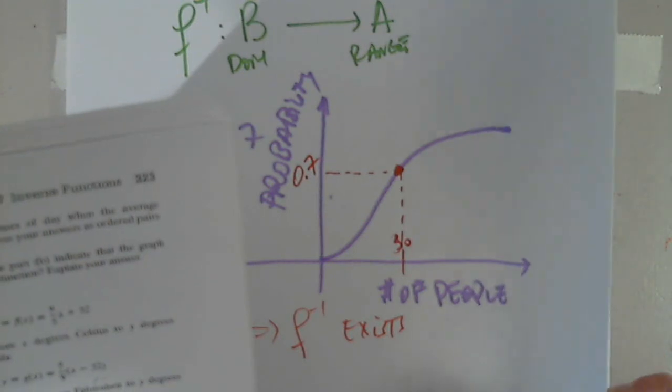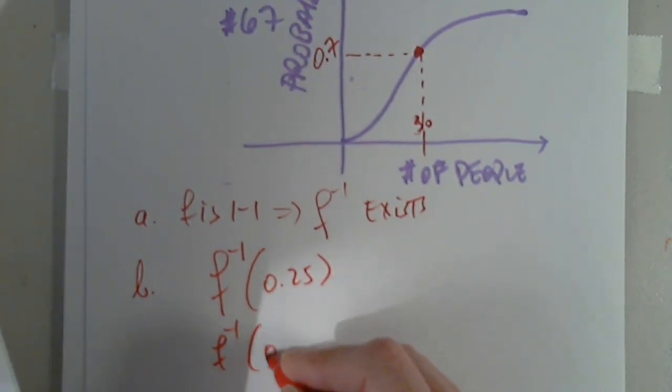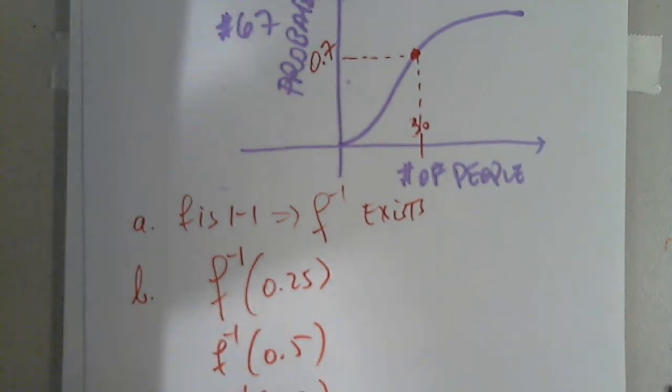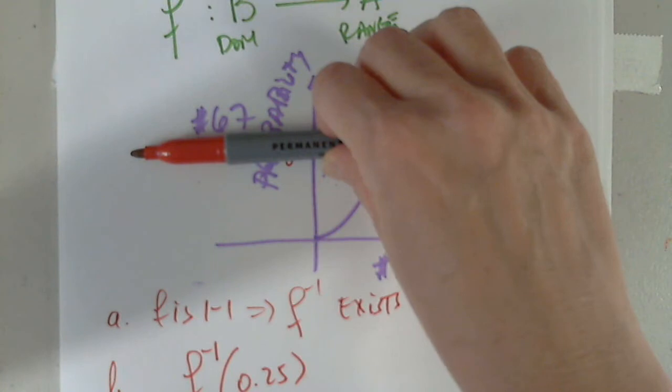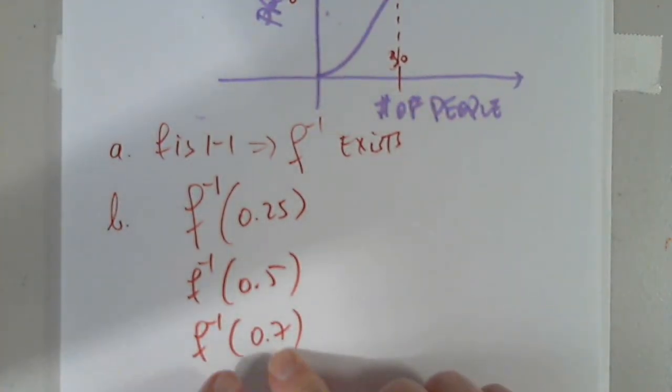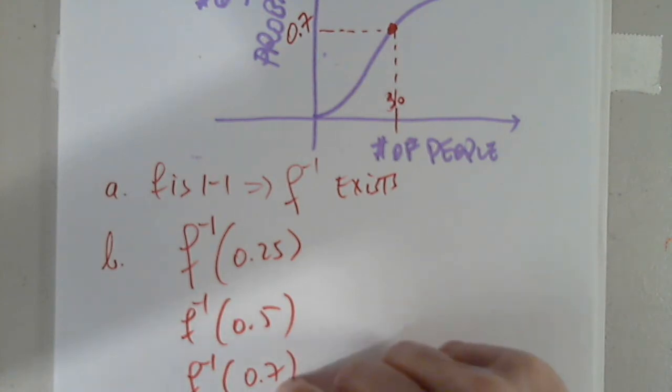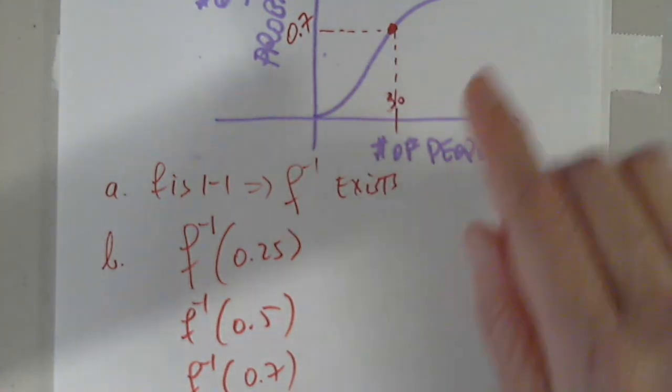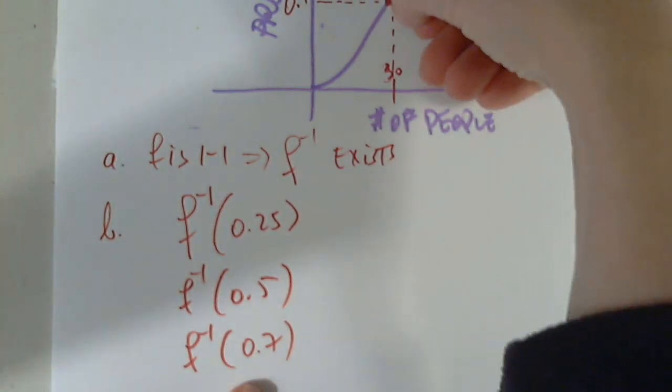Describe in practical terms, the meaning of F inverse of 0.25, F inverse of 0.5, and F inverse of 0.7. The function, when X is 30, I get 0.7 at the output. But when I apply the inverse function, when I apply the inverse function to 0.7, I get 30 people. What does that mean? If I want to know how many people I should have in the room, according to the model, to guarantee a 70% success, 70% probability that two of the people in the room share the same birthday, for 70%, F inverse of 70% would be 30.